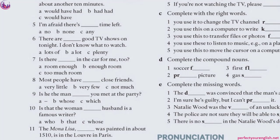Number 10: 'Is that the woman whose husband is a famous writer?' 'Whose' is correct — it replaces 'her.' The two sentences combined are: 'That is the woman' + 'Her husband is a famous writer' = 'Is that the woman whose husband is a famous writer?'